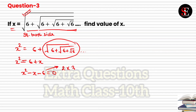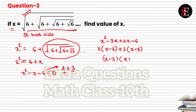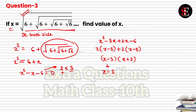Factoring 6 into 2 and 3 with appropriate signs: x² − 3x + 2x − 6. Taking x common gives x(x − 3), and taking +2 common gives +2(x − 3). So (x − 3) is one factor and (x + 2) is another. The value of x from the first factor is 3, and from the second factor is −2. These two values are the answer. Let's go to question number 4.